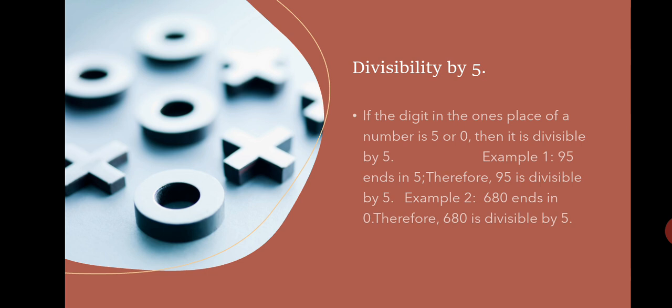Divisibility by 5: If the digit in the 1's place of a number is 5 or 0, then it is divisible by 5. Example: 95 ends in 5. Therefore, 95 is divisible by 5. If you take another example, 680, here in 680 the 1's place is 0. Therefore, 680 ends in 0. By the divisibility rule of 5, 680 is divisible by 5.